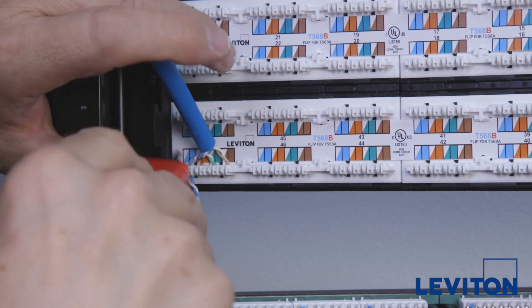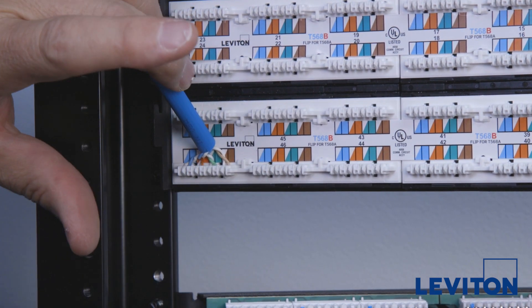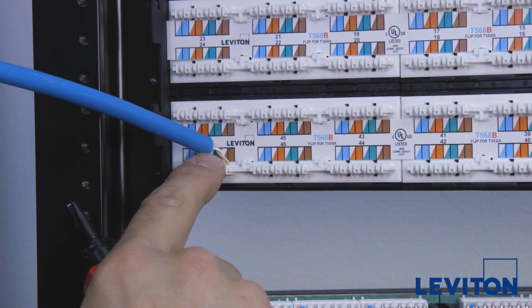With the Category 6A cable, it may require an extra punch to get through thick insulation. An important reminder is to maintain the twists in the cable as much as possible.